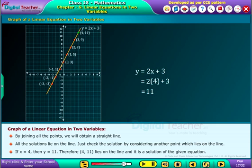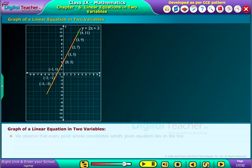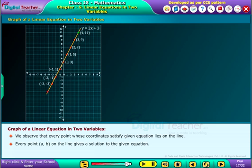Let us plot the solution. We observe that every point whose coordinates satisfy the given equation lies on the line. Every point on the line gives a solution to the given equation.